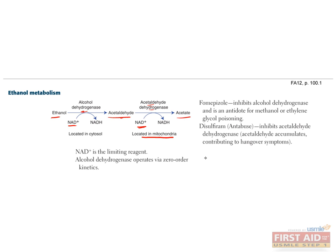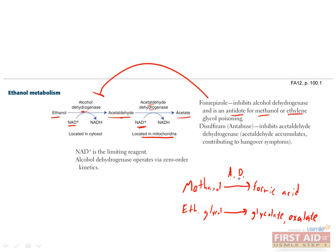Several medications can be used to treat alcohol poisoning and to maintain abstinence in alcoholics. Fomepizole inhibits alcohol dehydrogenase, but it's not used in situations involving excess ethanol. Instead, it's used as an antidote for methanol or ethylene glycol poisoning. Alcohol dehydrogenase converts methanol to formic acid, which causes visual disturbances, and converts ethylene glycol into glycolate and oxalate, which cause renal damage. Acetaldehyde is responsible for hangover symptoms, and disulfiram (Antabuse) inhibits acetaldehyde dehydrogenase, causing a buildup of acetaldehyde and more severe hangover symptoms — conditioning patients to abstain from alcohol.